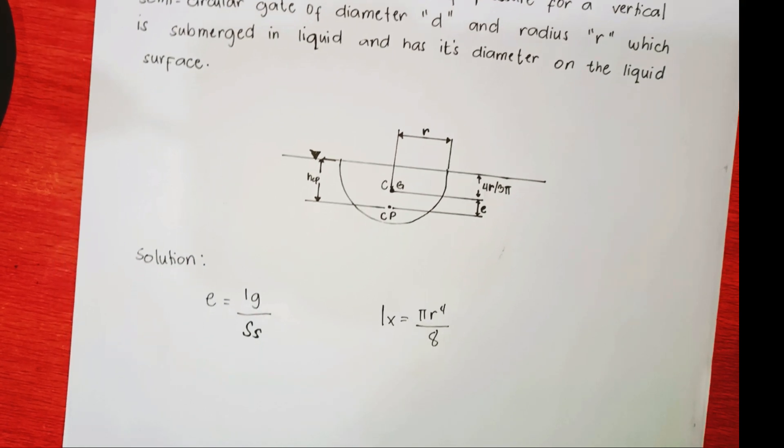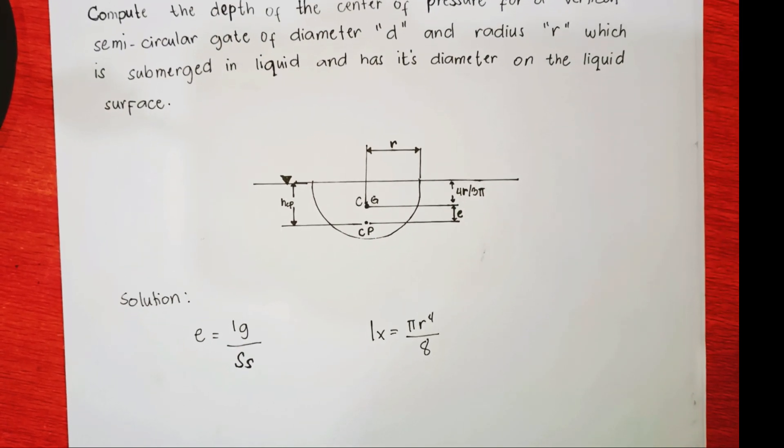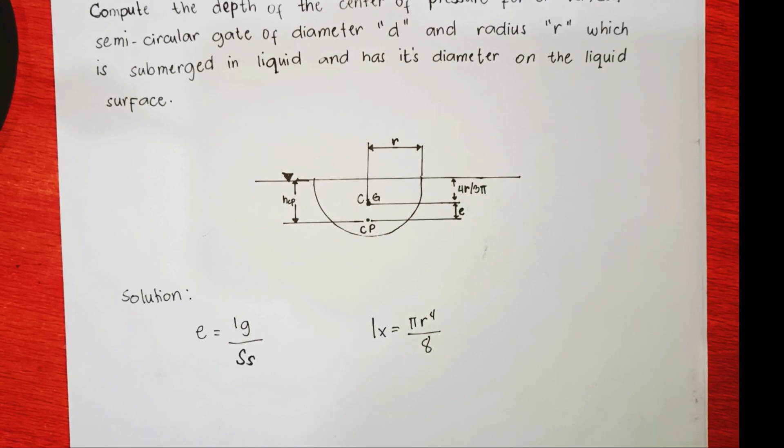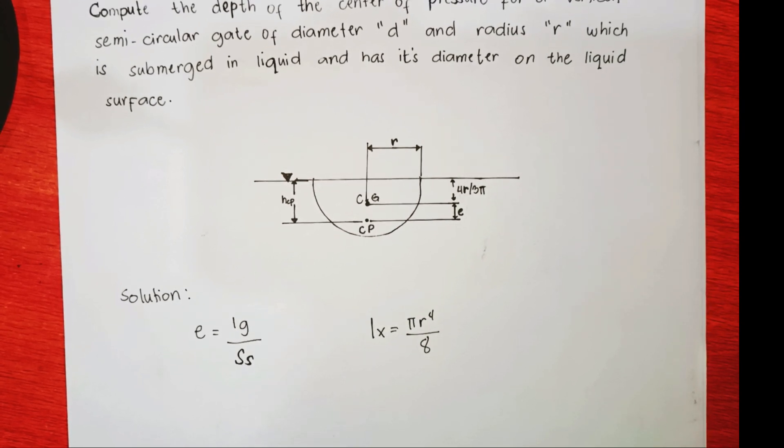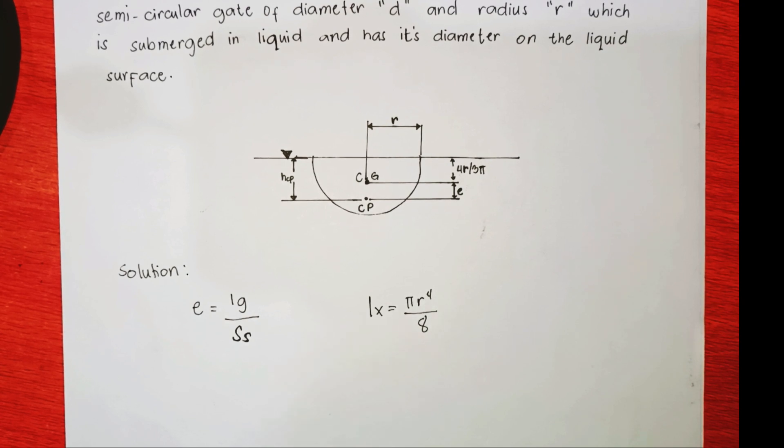We have an equation: ig equals s sub s. So ig is the moment of inertia with respect to cg, and s sub s is the statistical moment with respect to the water surface.